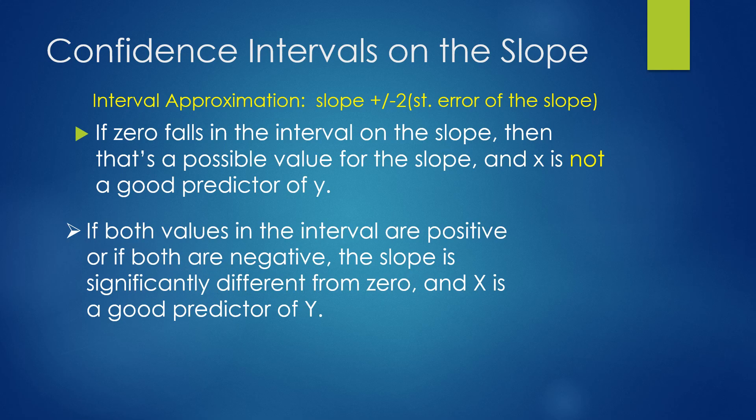We'll also get confidence intervals on the slope. So when we work it out, we'll have an interval estimation taking the slope plus and minus 2 times the standard error of the slope. If 0 falls in the interval, then that's a possible value for the slope, so x is not a good predictor of y, because no slope means that y is not moving with x. If both values in the interval are either positive or both are negative, the slope is significantly different from 0 and x does have some predictive power.